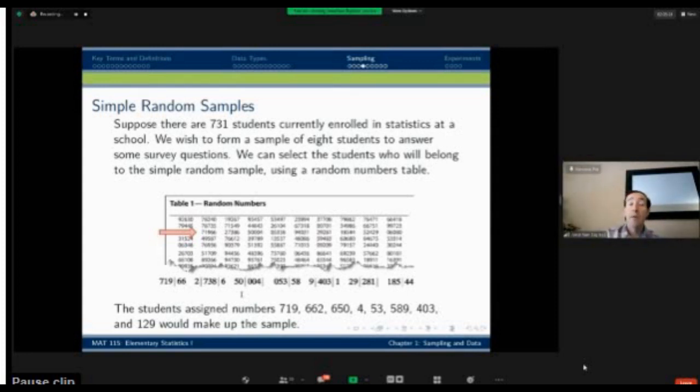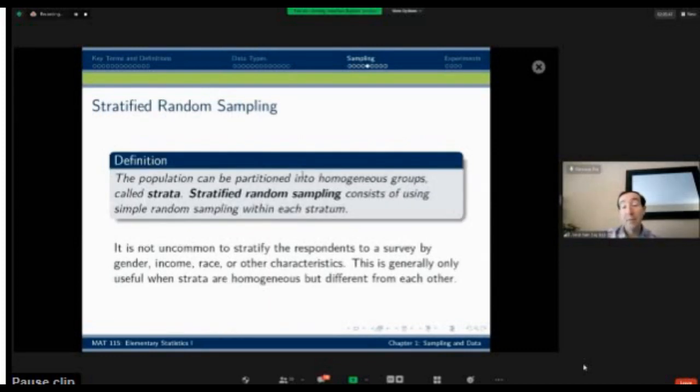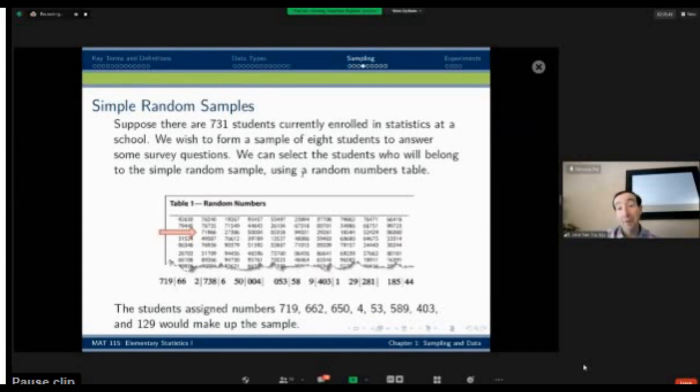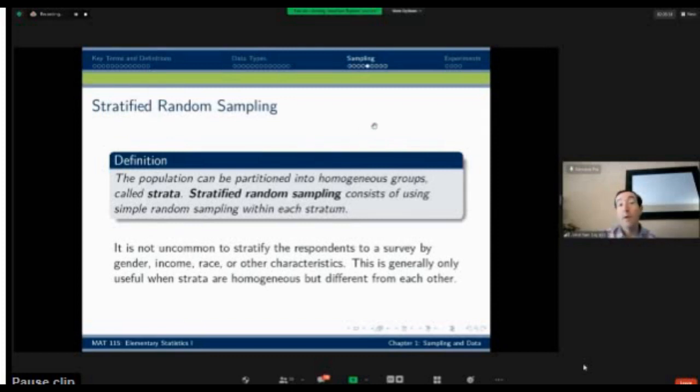So that's a simple random sample. That's one method of doing it. That will give each possible combination, each group of eight out of the 731 an equally likely chance. Anyone who's done probability may remember combinations. 731 combination eight or 731 choose eight. That's a binomial coefficient that would be exceptionally large. There's a very large number of possible groups of eight that come out of that. Each one is equally likely if you use this process.